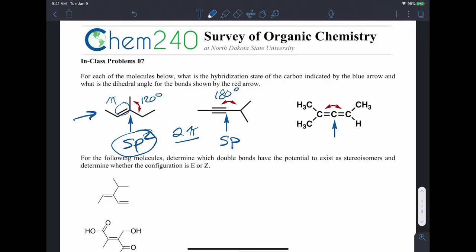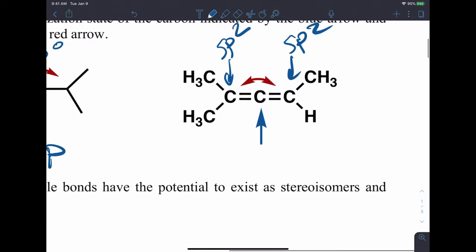What's interesting about this molecule on the right — and you might not have seen something like this before — is that the two end carbons are sp2 hybridized, like a normal alkene, but that central carbon has pi bonds to two different carbons. So if you just focus on that central carbon atom, that carbon has to make two pi bonds, and that only leaves an s and a p left. So it is similar to an alkyne in that it is sp hybridized. The other two p's are remaining to make the pi bonds.